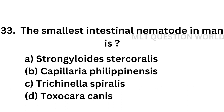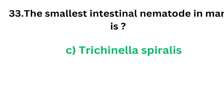Question number 33: The smallest intestinal nematode in man is — option A: Strongyloides stercoralis, option B: Capillaria philippinensis, option C: Trichinella spiralis, option D: Toxocara canis. The correct answer is option C, Trichinella spiralis. The smallest intestinal nematode in man is Trichinella spiralis.